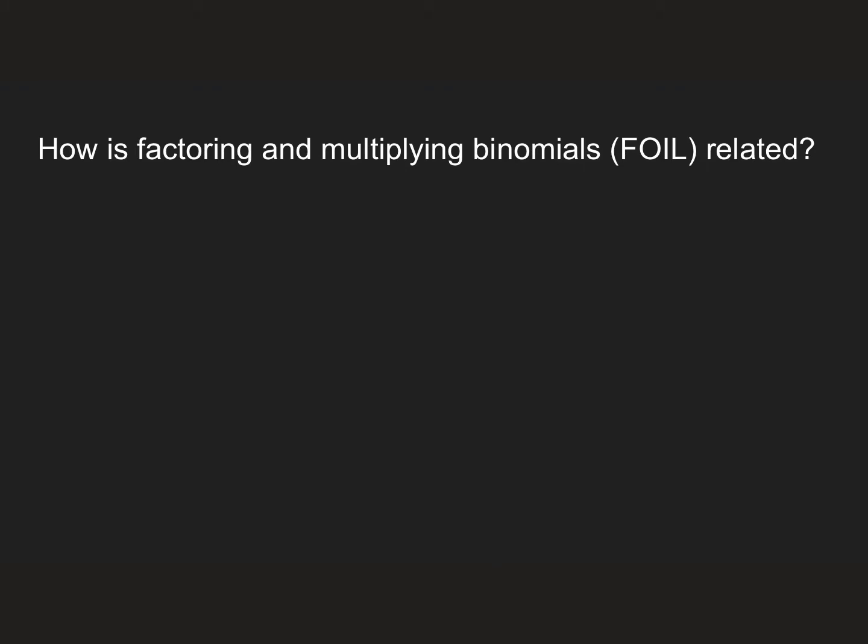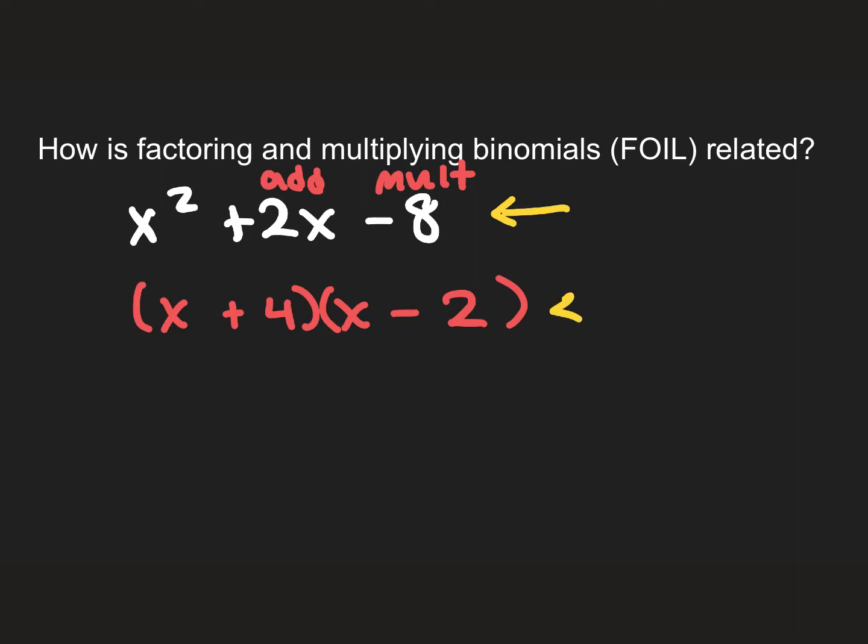When you are given a factoring problem, such as x² + 2x - 8, the goal when we're factoring is we want to determine what numbers multiply to -8 and add to 2. And when I list those numbers, the two numbers that do is 4 and -2. So if I have my factors are x and x, it becomes (x + 4) and (x - 2). Now what we can see here is that this would be what we would have if we were foiling. You would go from here to here, versus when you factor, you go from the standard form to the factors. So they're kind of inverse processes.